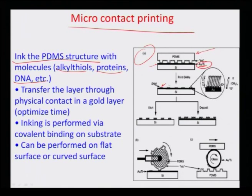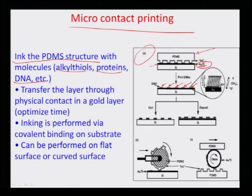You can see alkyl thiol self-assembled monolayers being transferred from the stamp as small heaps or small patches. The blow-up view shows these are about 2.3 nanometers in height at an angle of 60 degrees — a sort of self-assembled monolayer with regular assembly of these structures. This is a transfer technique of SAMs onto the gold layer.